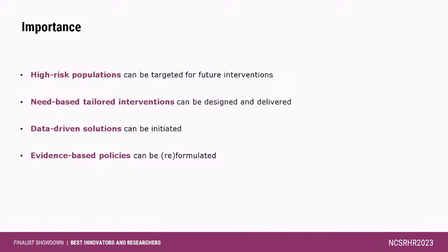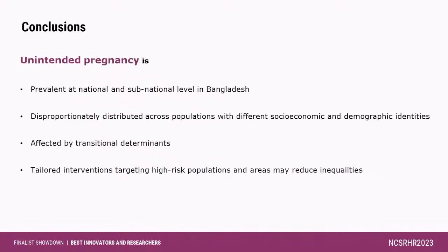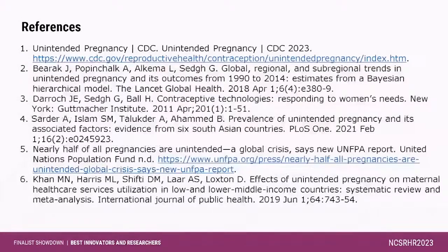In conclusion, unintended pregnancy is prevalent at the national and sub-national level in Bangladesh. It is disproportionately distributed across populations with different socio-economic and demographic identities, and is affected by transitional determinants. Tailored interventions targeting high-risk populations and areas should reduce these inequalities. Thank you all for your cooperation.